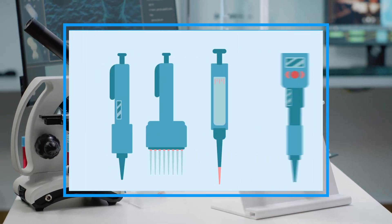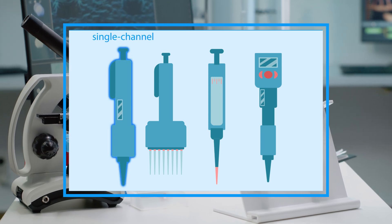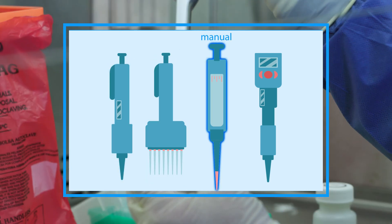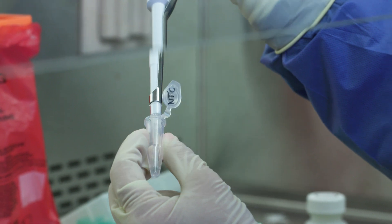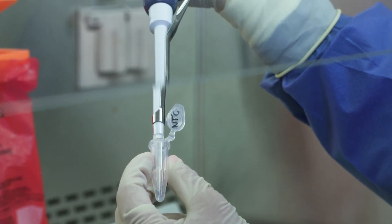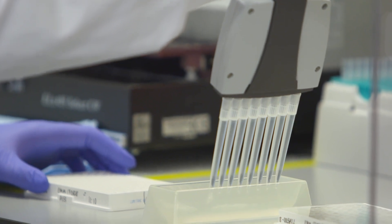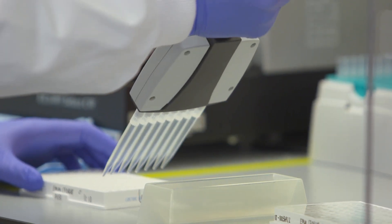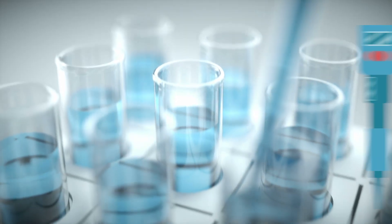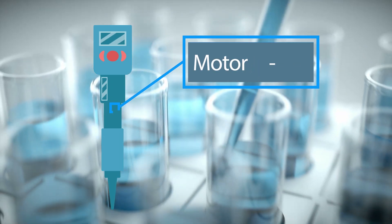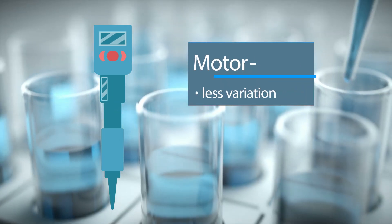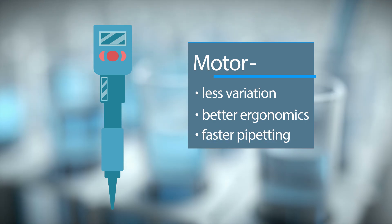Micropipets also come in different types, including single channel, multi-channel, manual, and electronic. Single channel micropipets handle one liquid at a time, while multi-channel micropipets transfer several volumes of liquid simultaneously. Electronic micropipets are controlled by a motor, which allows for less variation between operators, better ergonomics, and faster pipetting.